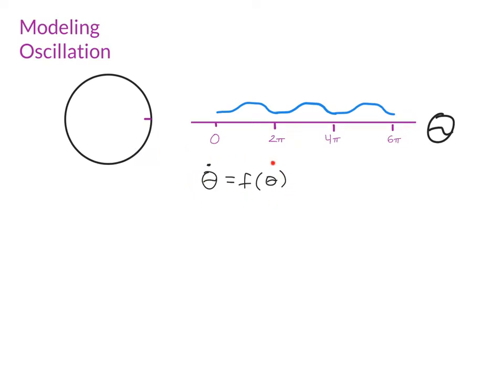The most important thing to note about this type of system is that the right-hand side for theta dot is going to have to be periodic, because however we define the behavior of the vector field, however we define f of theta when theta is 0, we better have the same f of theta when theta is 2 pi, because over on the circle 0 and 2 pi are actually the same place.